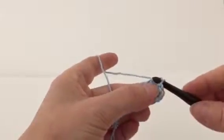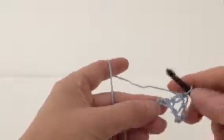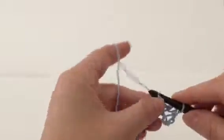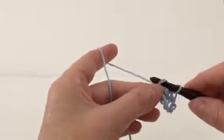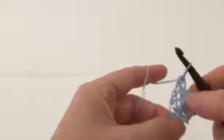Pulling it through the last stitch on the hook, then I'll continue going this way. Go into the chain, pull one, two, three, four, and then pull it through the last stitch on the hook.